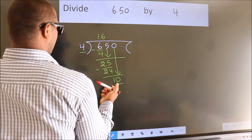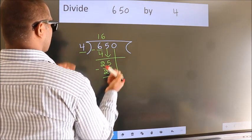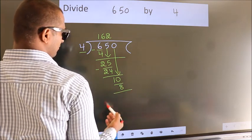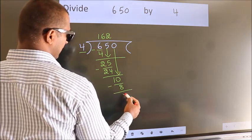A number close to 10 in the 4 table is 4, 2s, 8. Now we subtract. We get 2.